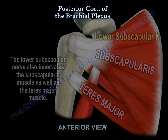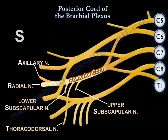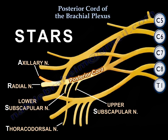Some people use the word STARS to remember the branches of the posterior cord. S is for the upper Subscapular, T is for the Thoracodorsal — the nerve to the latissimus dorsi, A is for the Axillary nerve — deltoid and teres minor, R is for the Radial nerve, and the final S is for the lower Subscapular — supplying the subscapularis and teres major. The posterior cord is STARS.